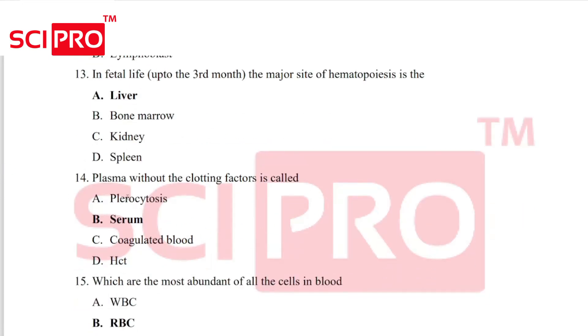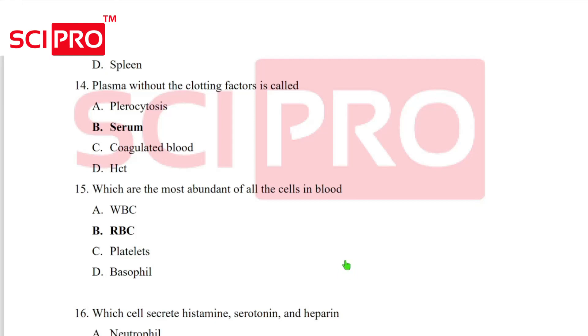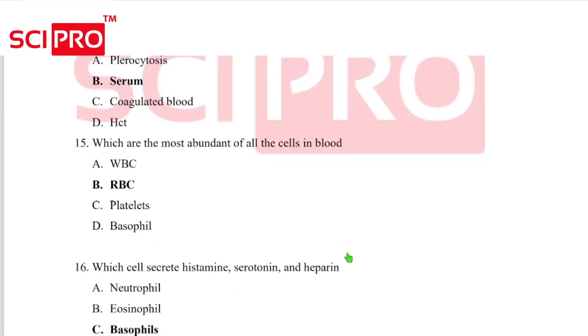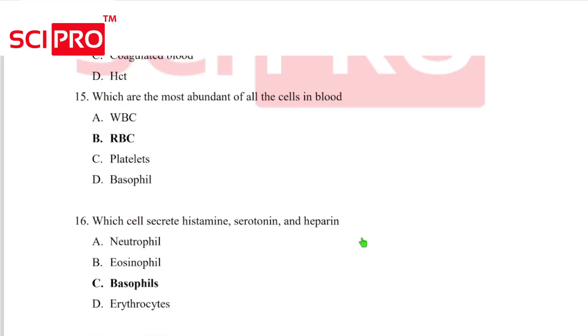Question number 14, plasma without the clotting factor is called serum. Question number 15, which are the most abundant of all the cells in blood? RBC. Question number 16, which cells secrete histamine, serotonin and heparin? Basophil.